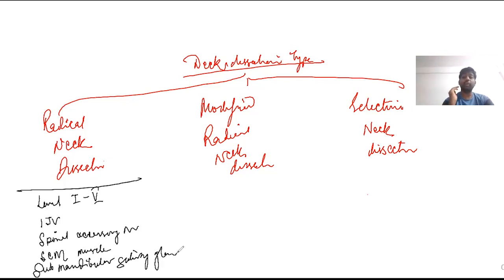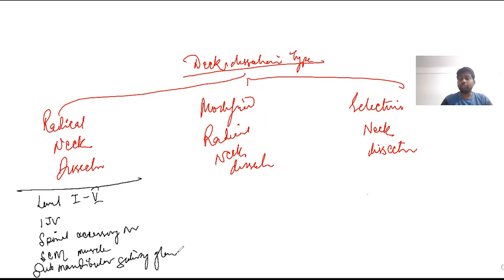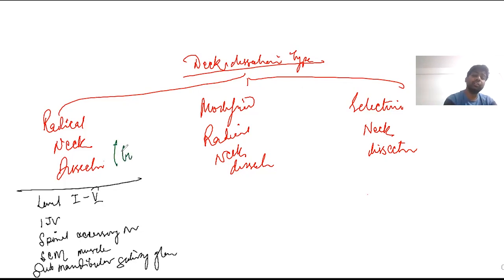Previously, even the tail of the parotid gland was removed in radical neck dissection. So in summary, radical neck dissection removes level 1 to 5 lymph nodes, the internal jugular vein, sternocleidomastoid, spinal accessory nerve, the submandibular gland, and sometimes the tail of the parotid gland. This is also known as Crile's neck dissection.